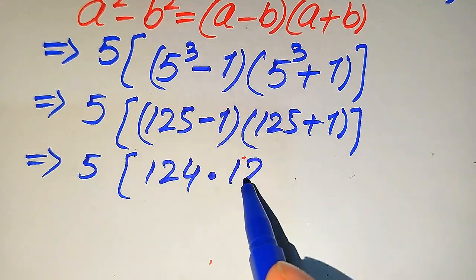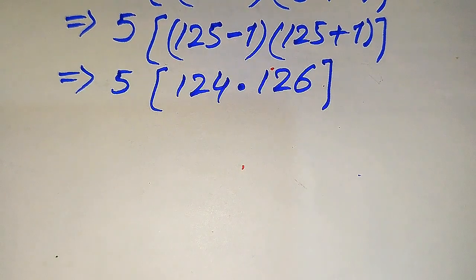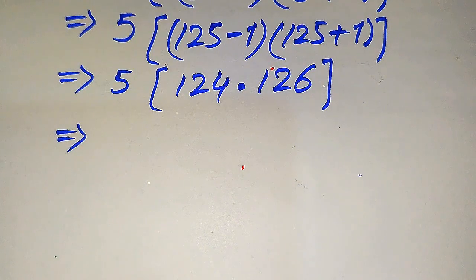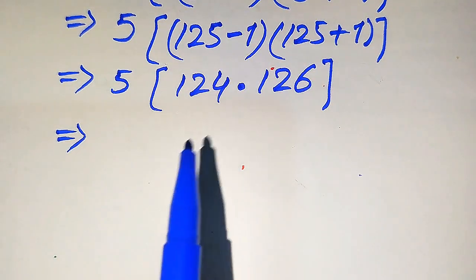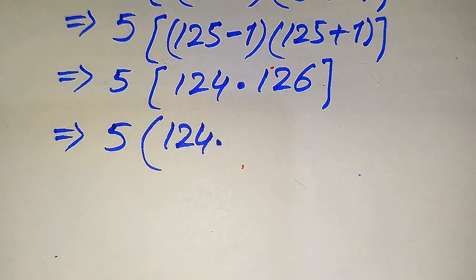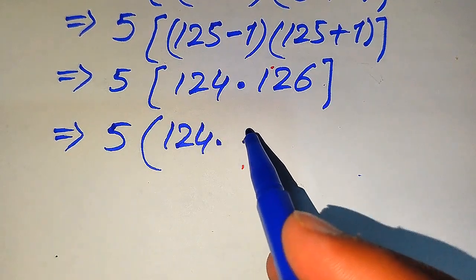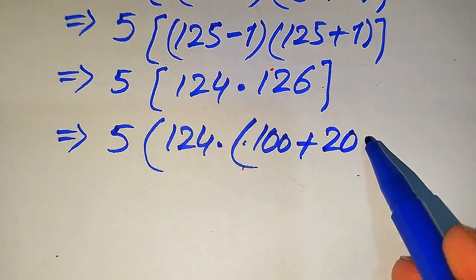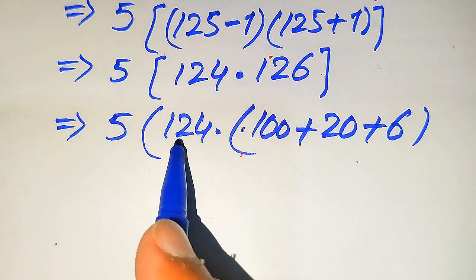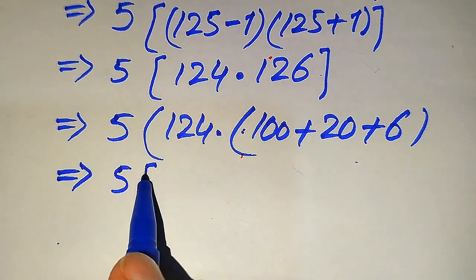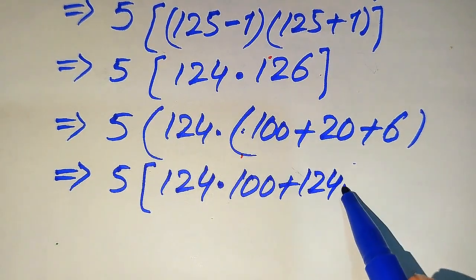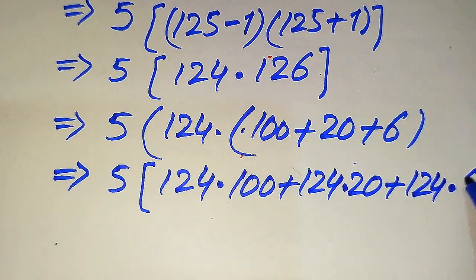So 125 minus 1 is 124 and 125 plus 1 is 126. We need to multiply 124 by 126. To do this without a calculator, we break 126 into hundreds, tens, and ones: 100 plus 20 plus 6. We then multiply 124 by each part separately: 124 times 100, plus 124 times 20, plus 124 times 6.